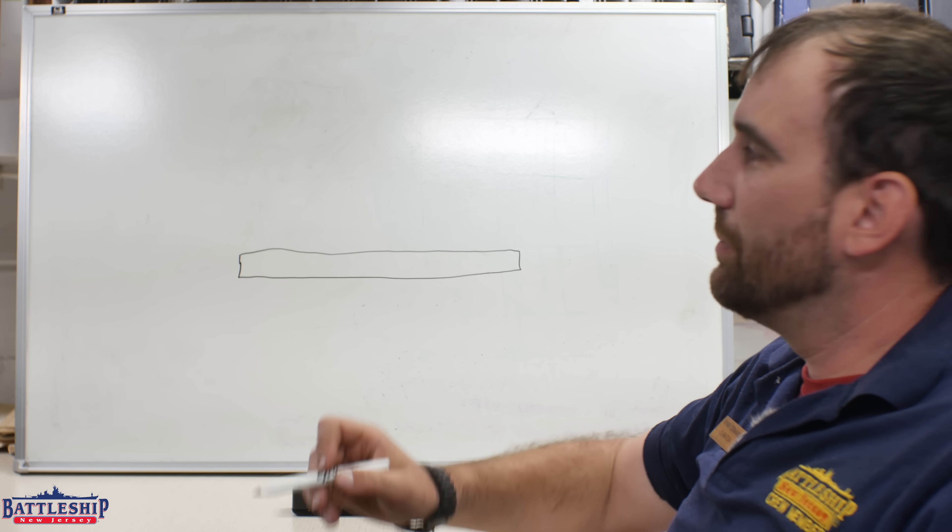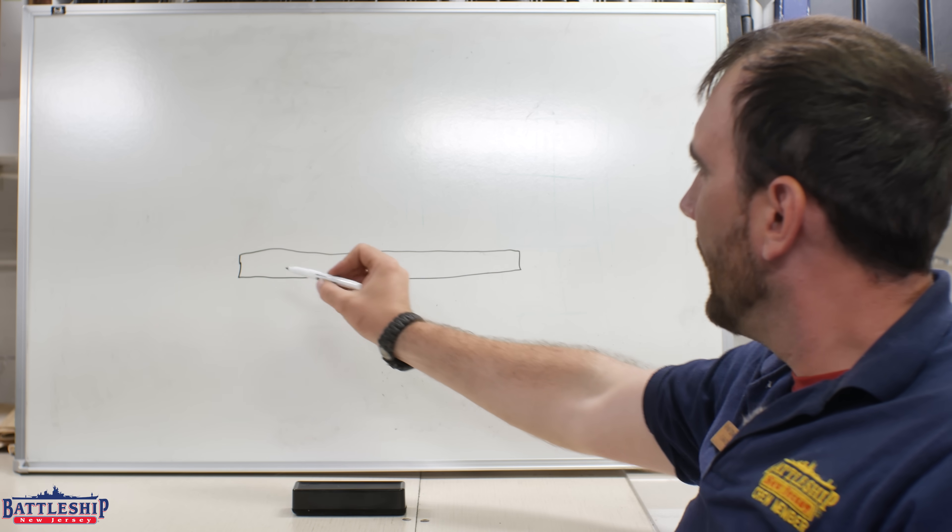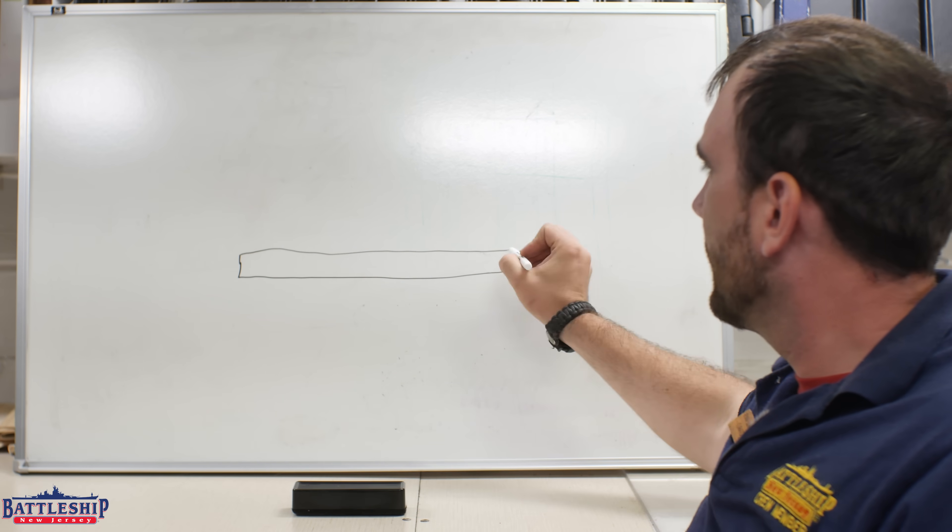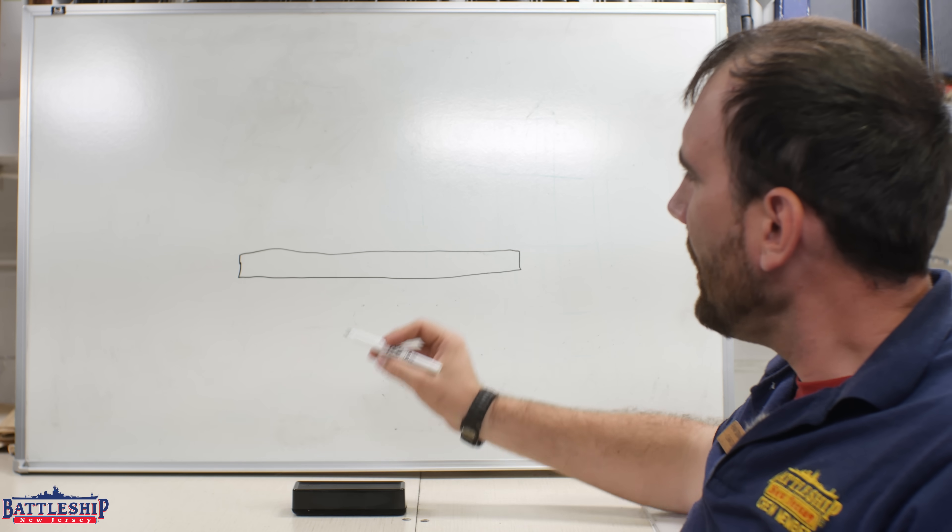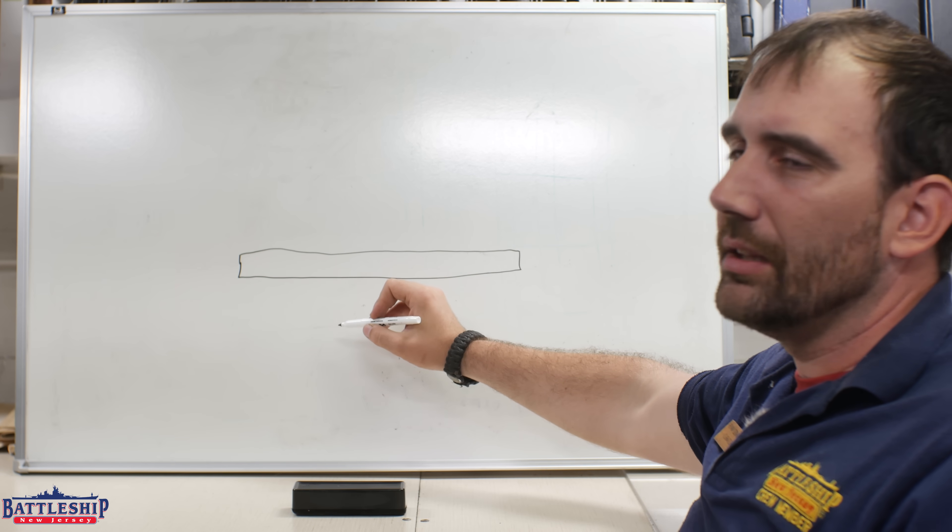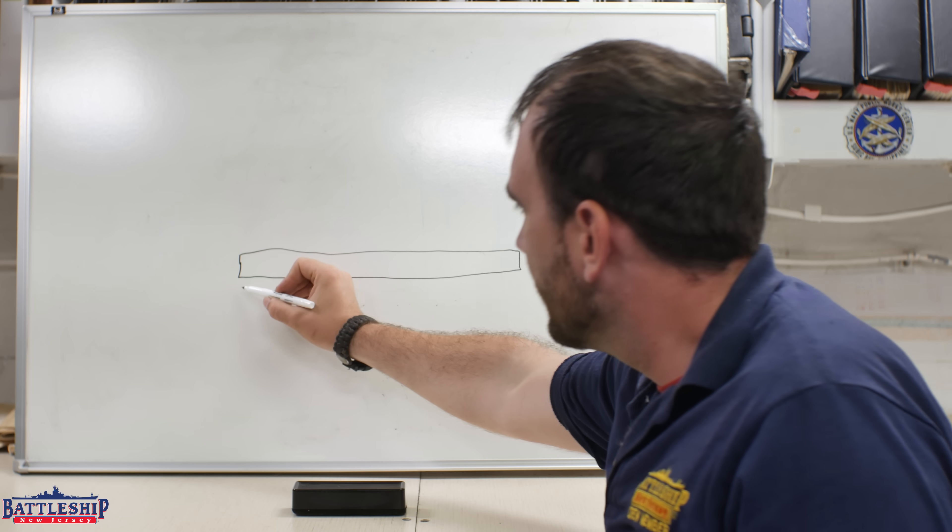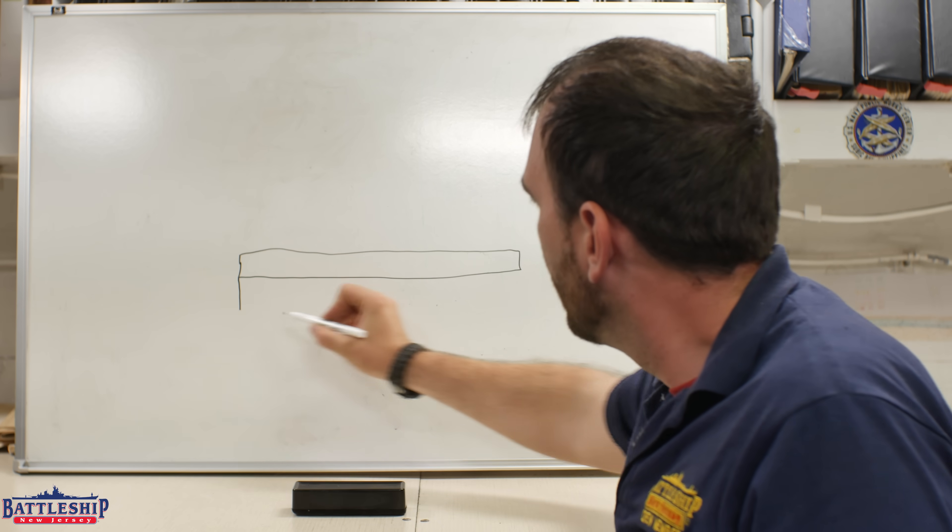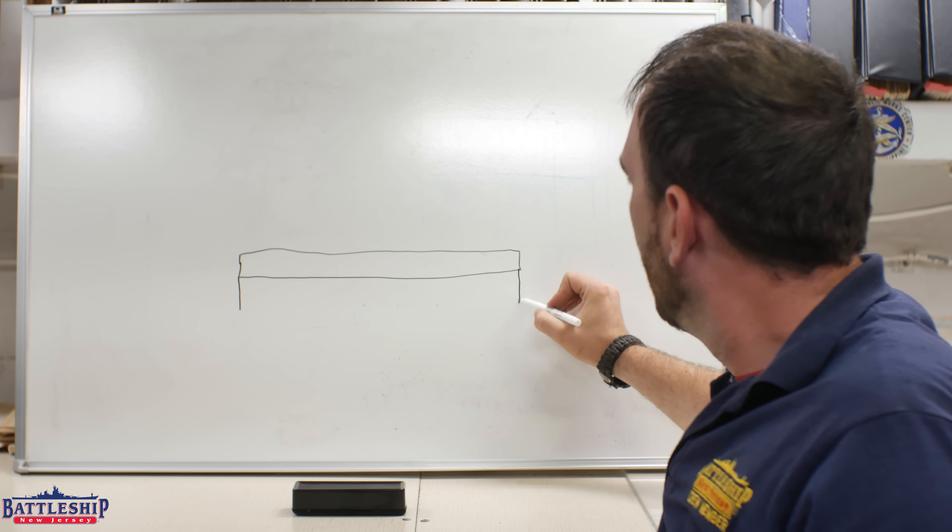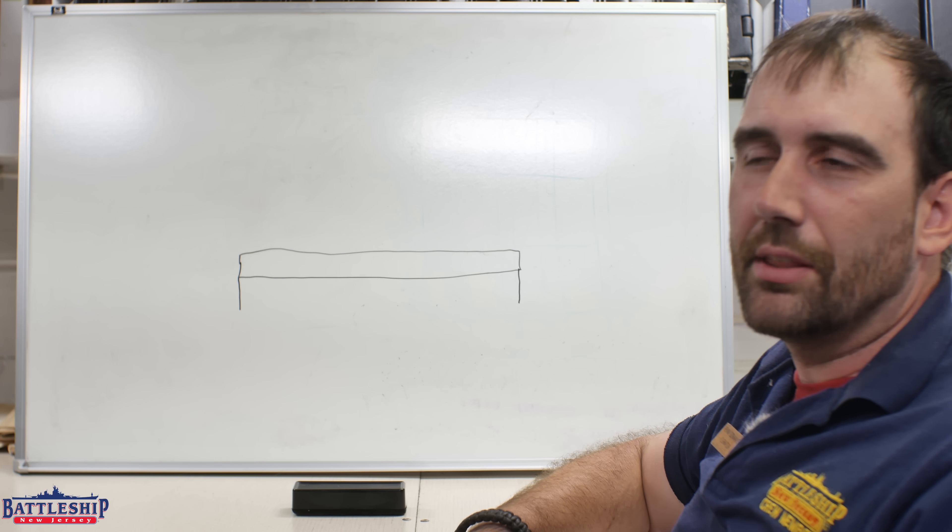In addition to the armored belt, you've got on top the 6-inch thick armored deck. And then there's a lower belt beneath this, that is tapering in thickness all the way to the bottom.